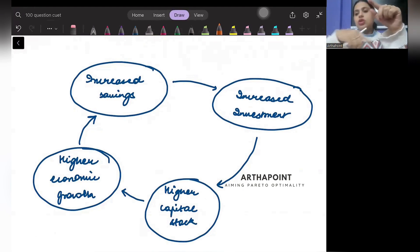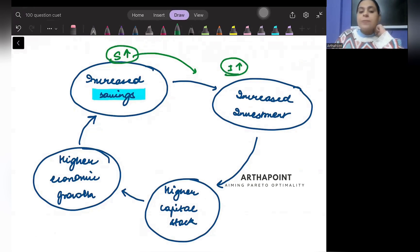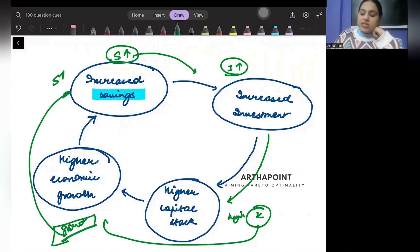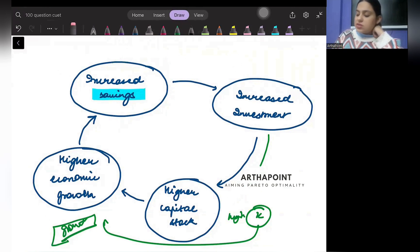When savings increase, investment increases. When investment increases, capital stock increases. When capital increases, there is economic growth. When there is growth, savings automatically increase in the economy.